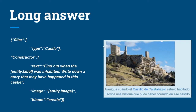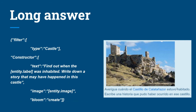Here is an example of a long answer question — here's a template and one of the resulting questions. This template is applied to every entity of type castle. The constructor finds out when the monument was inhabited and asks: 'Write down a story that may have happened in this castle,' accompanied by an image of the castle. Here you have an example with the castle of Castilnazor.